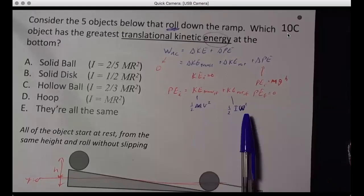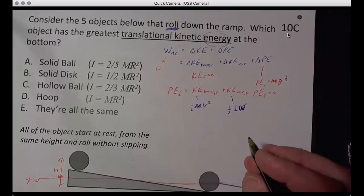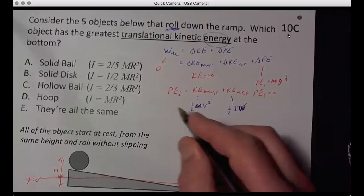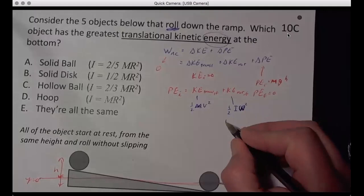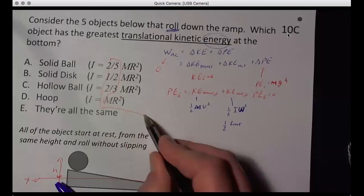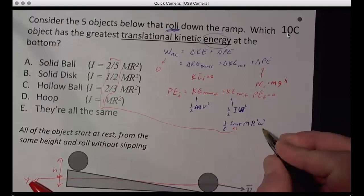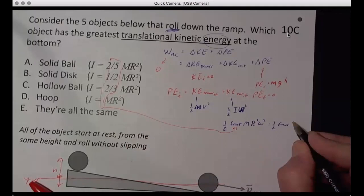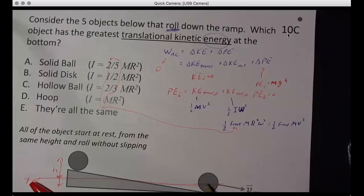Now notice if we have this in some fraction times MR squared, and then MR squared times omega squared is V squared. So really this is going to be one half whatever fraction is in front. That's my fraction MR squared omega squared, which is one half whatever fraction that is MV squared.